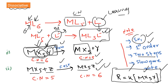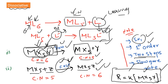The reaction is completed in two steps. In the first step, dissociation takes place, and in the second step another ligand replaces the leaving ligand in the intermediate complex. The first step is slow — dissociation occurs — and the second step is fast, because it involves the combination of two oppositely charged ions. This is the dissociative mechanism.